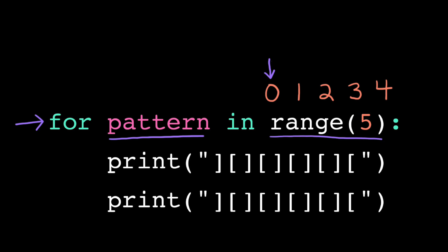So, before the first iteration, the computer will assign the value 0 to the loop variable pattern, because 0 is the first number in the range. Then it enters the loop body and executes the lines of code indented inside of it in order. So it'll execute this print statement and then this print statement.